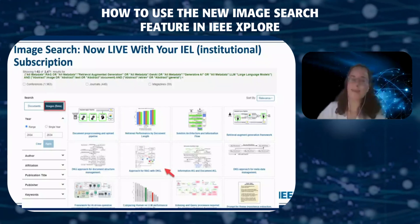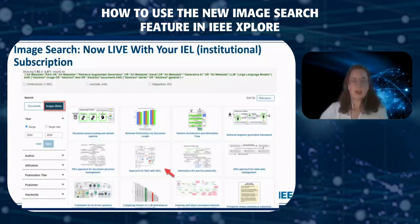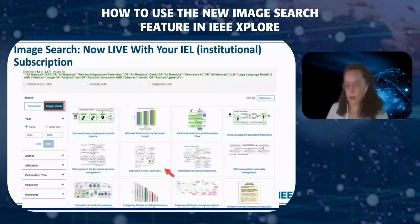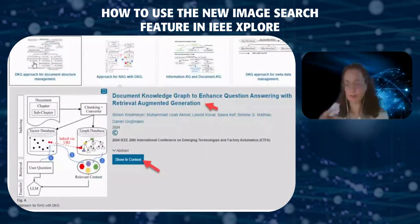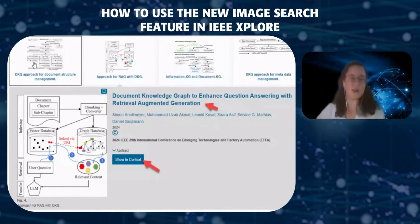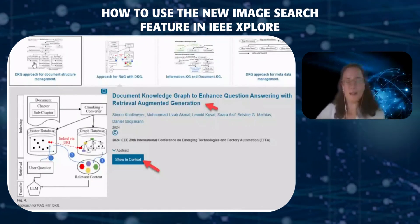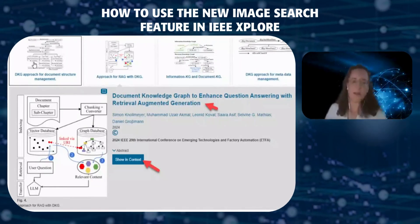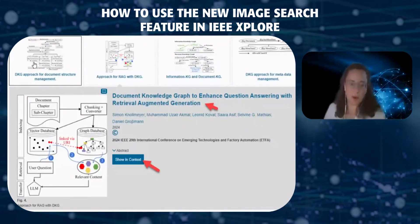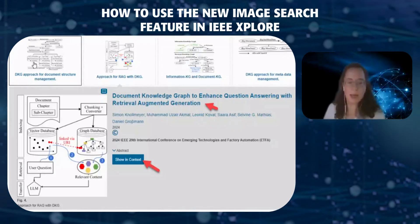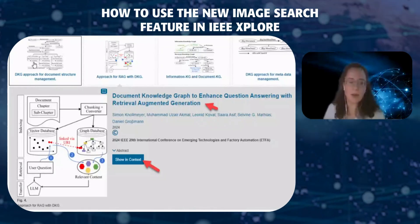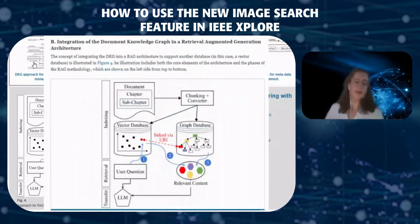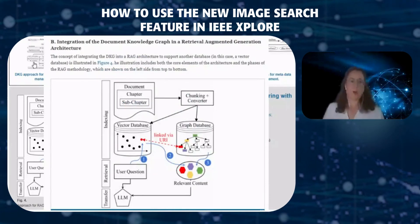If you hover over the images, you can see them in a bigger resolution. You can also see the article where they are published. If you click on 'show in context,' you open the full-text article and can instantly navigate to that specific figure or picture within the article.